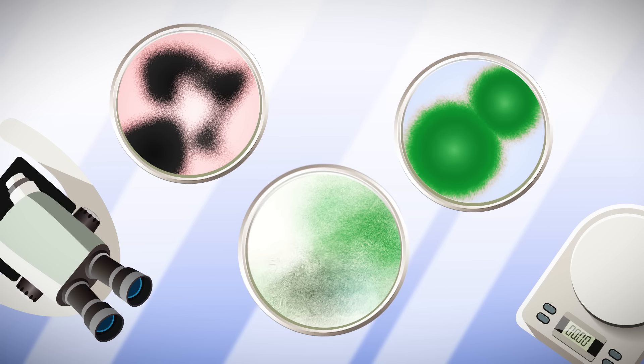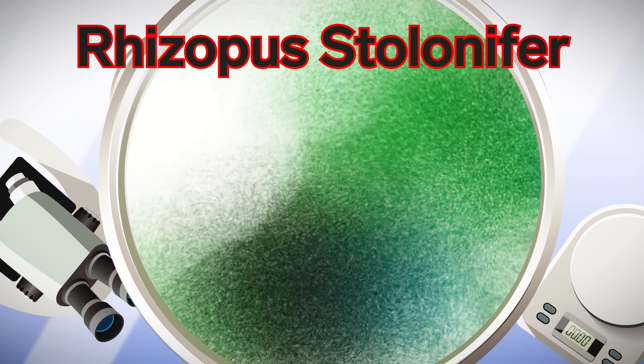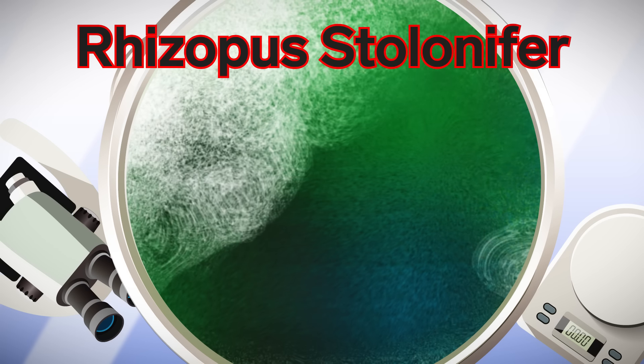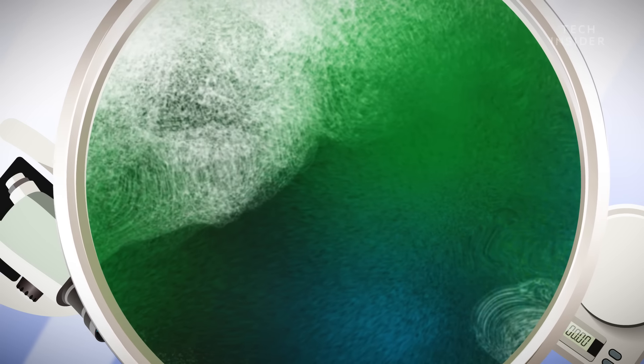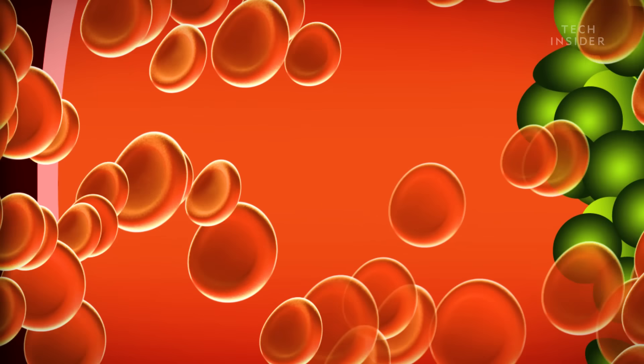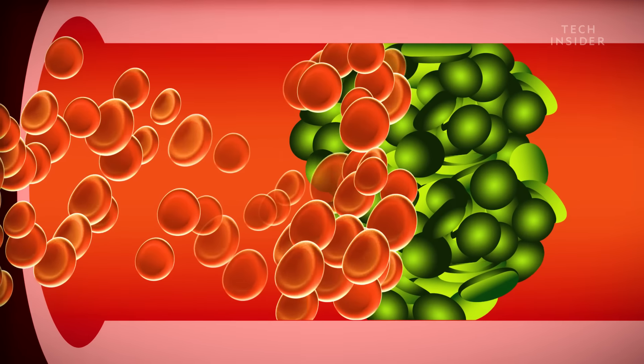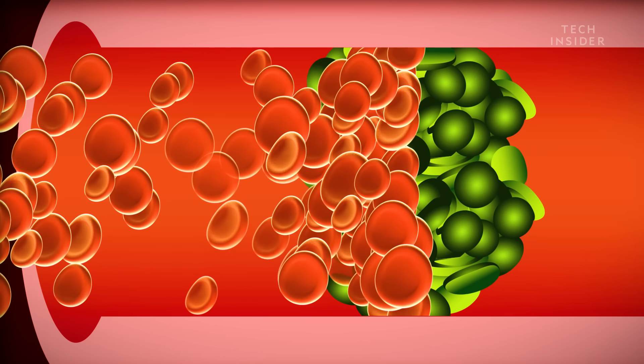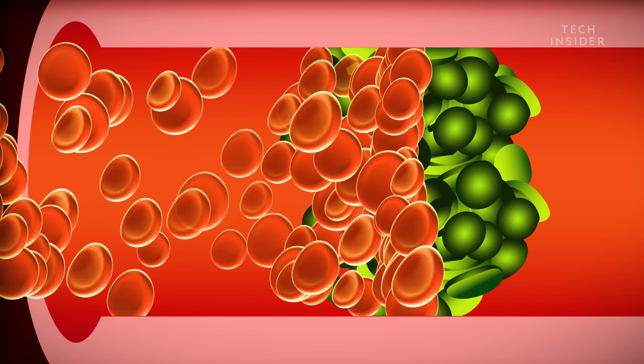But other molds like rhizopus stolonifer can have permanent effects. And you might recognize this mold since it commonly grows on bread. Blue-green with black splotches and super fuzzy. In rare cases, it can prompt a deadly infection called zygomycosis, which causes your blood to clot and can ultimately starve your cells of oxygen to the point that they die.